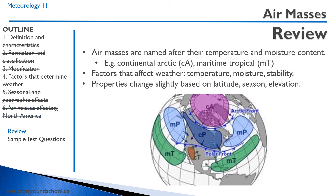Air masses are named after their temperature and moisture contents. For example, the continental Arctic is going to be a dry, cold air mass, and maritime tropical will be a wet, hot air mass. Factors that affect the weather are temperature, moisture, and stability. The air mass properties can change slightly based on latitude, season, and elevation.